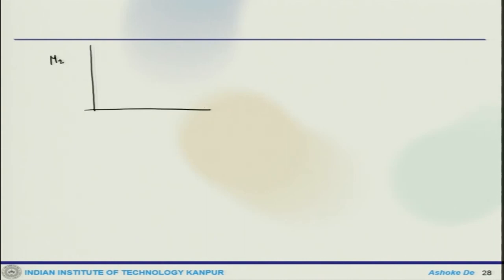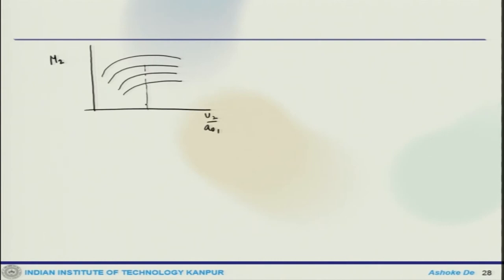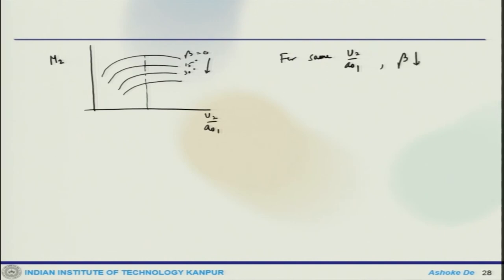Similarly, plotting M2 versus U2/A_naught1 shows that as beta decreases toward zero, M2 increases. So for the same U2/A_naught1, beta = 0 (radial blade) gives the maximum Mach number at the impeller exit. This means the diffuser inlet can experience supersonic flow at lower values of beta.